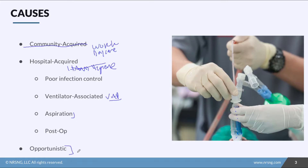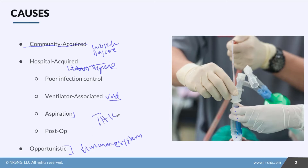Finally, there's something called opportunistic pneumonia. This occurs in immunocompromised patients. An organism makes its way into the system, and someone with a normal immune system would be able to easily fight it off. But a patient who's immunocompromised — decreased immune system — they're not going to be able to fight it off. A good way to think about this is like a thief who sees an easy target. That's the difference between community-acquired, hospital-acquired, and opportunistic pneumonia.